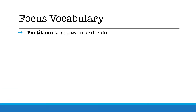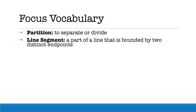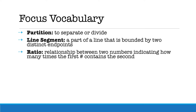So what does the word partition mean? Partition means to separate or divide. A line segment specifically is a part of a line that is bounded by two distinct endpoints. When you partition a segment, you will be given a specific ratio. A ratio is a relationship between two numbers indicating how many times the first number contains the second.